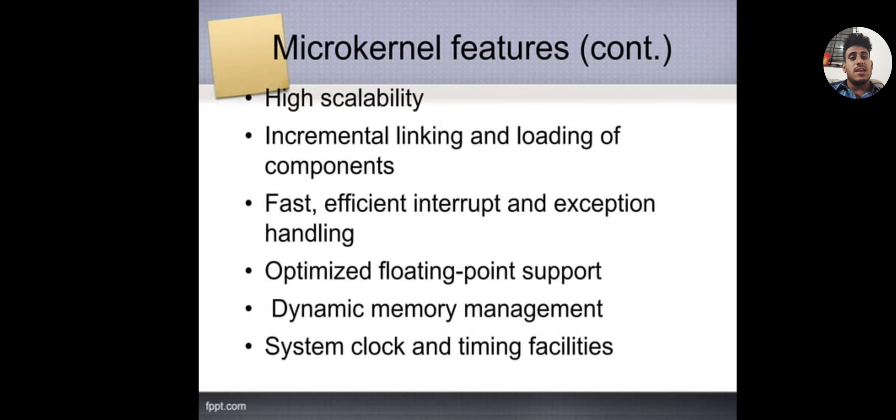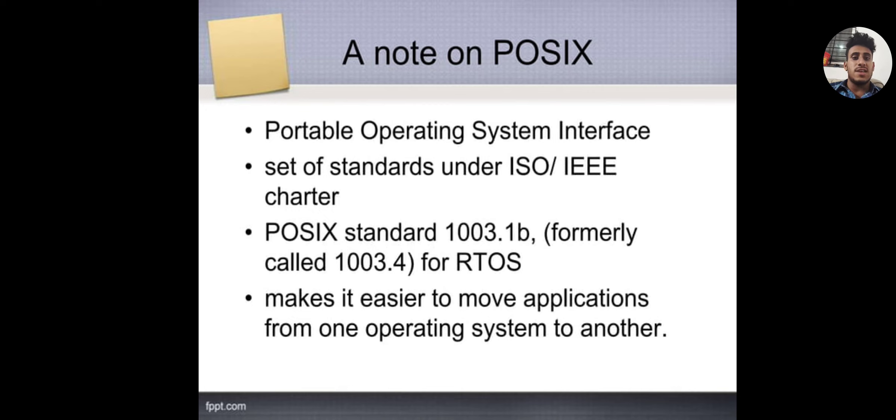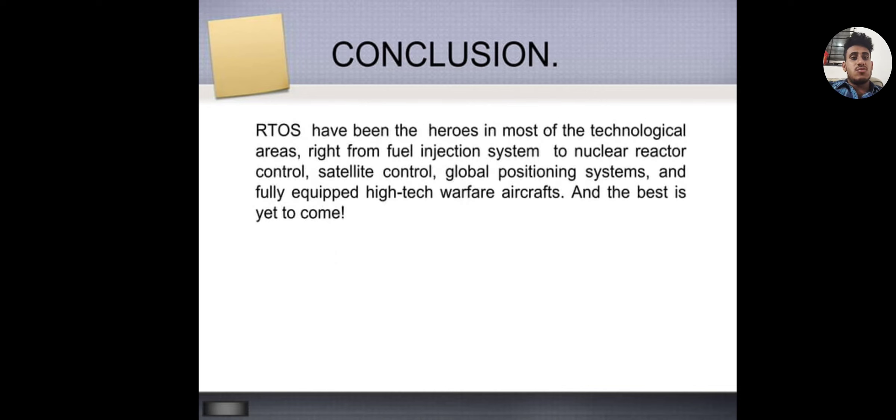Micro-kernel features: High scalability, incremental linking and loading of components, fast and efficient interrupt and exception handling, optimized floating-point support, dynamic memory management, and system clock and timing facilities. A note on POSIX: Portable Operating System Interface, set of standards under ISO and IEEE. POSIX standard 1003.1b, formerly called 1003.4, was for RTOS. Makes it easier to move applications from one operating system to another.